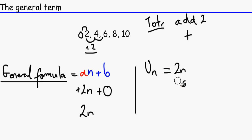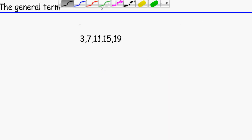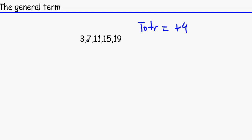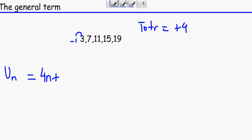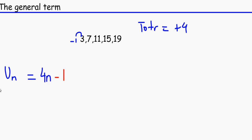For this next sequence, we know that the term-to-term rule is to add 4, because 3 plus 4, plus 4, plus 4, plus 4. So the general formula, UN equals 4N plus... and then we need to find out what the previous term is. That's minus 1. So it would actually be 4N minus 1. And that is the general formula for this particular sequence.